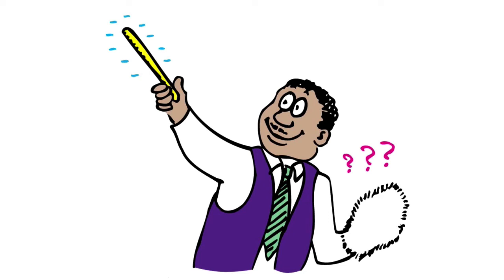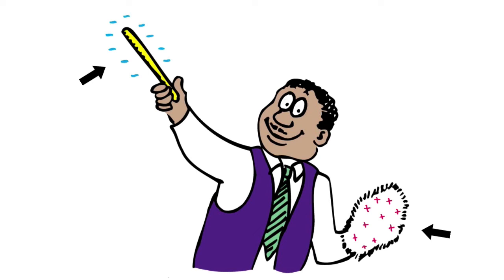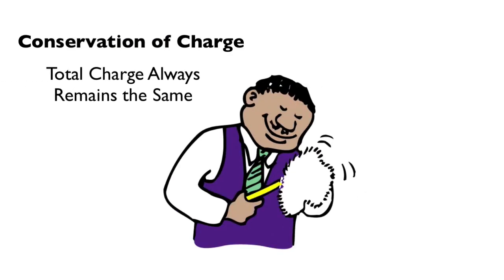That's right, the fur now carries a net positive charge. But is the degree of the negative charge on the rod exactly equal and opposite to the positive charge on the fur? Absolutely. Why? Because for as many electrons that the rod gained is exactly as many electrons that the fur lost. That's what we call the conservation of charge.